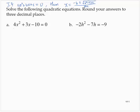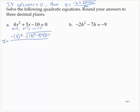So for part a, I have a equals 4, b equals 3, and c equals negative 10. Applying the quadratic formula, x is equal to negative b plus or minus the square root of b squared minus 4ac over 2a.